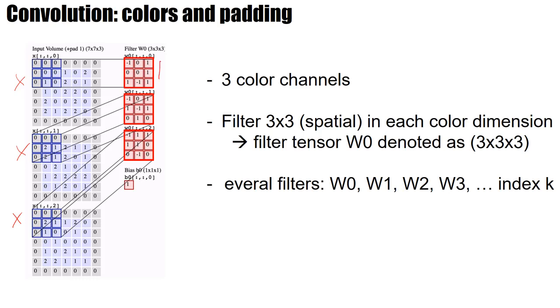So this is the filter for channel 0, this is the filter for channel 1, this is the filter for channel 2. So if each filter is 3x3 in the spatial dimension, then we have a total filter tensor 3x3x3. And we have several filters, and the filter index is k.